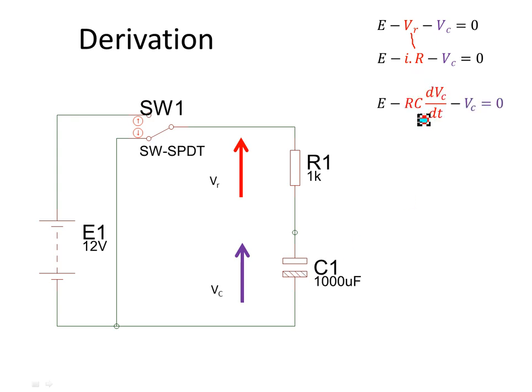Substituting that in, I have C times dV/dt times R minus Vc plus E is equal to zero.